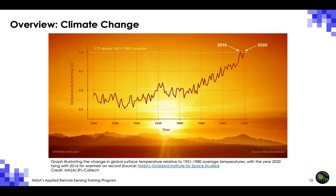This graph illustrates the change in global surface temperature from 1880 to 2020, relative to the 1951 to 1980 average temperatures. The years 2020 and 2016 are tied for the warmest on record throughout this 140-year period. Global surface temperature is calculated by averaging temperature at the surface of the sea and air temperature over land, derived from thousands of meteorological stations, buoys, ships, and satellites.